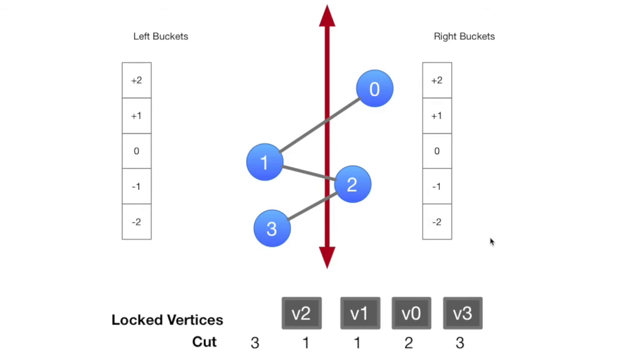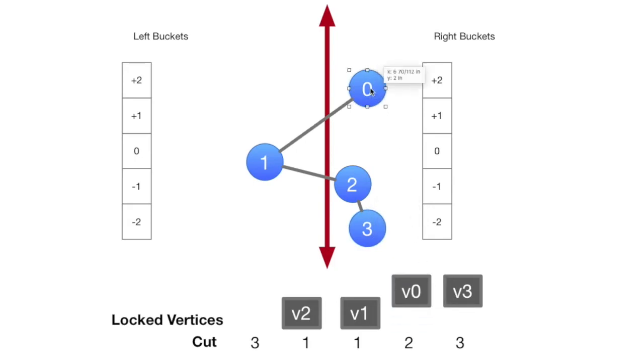This is sort of the end of the Fiduccia-Mattheyses pass, so now we're going to roll back, try to find the best solution we can find so far. So in this configuration, we're going to undo the move of vertex 3, undo the move of vertex 0, and here's the best solution we've seen, cut of 1, in this configuration. We also have a tie, so we could also choose this one, moving vertex 2, that's also a cut of 1. Either one of these have a cut of 1, I happen to like this one better because it's a little bit more balanced. And that is a single pass of Fiduccia-Mattheyses.